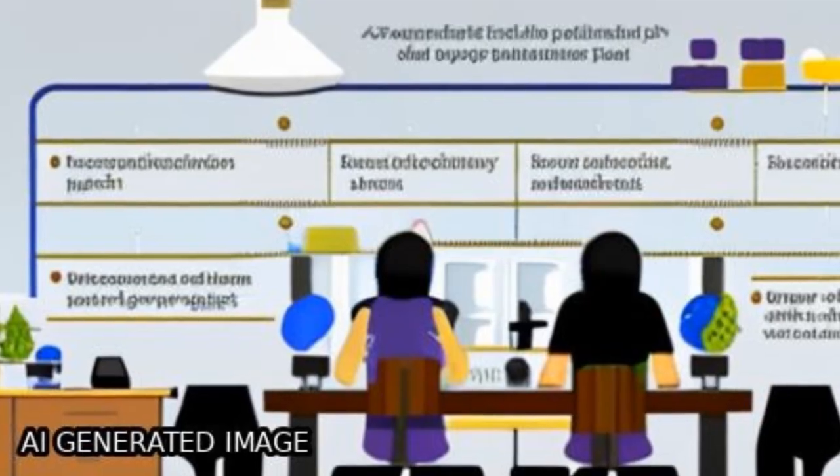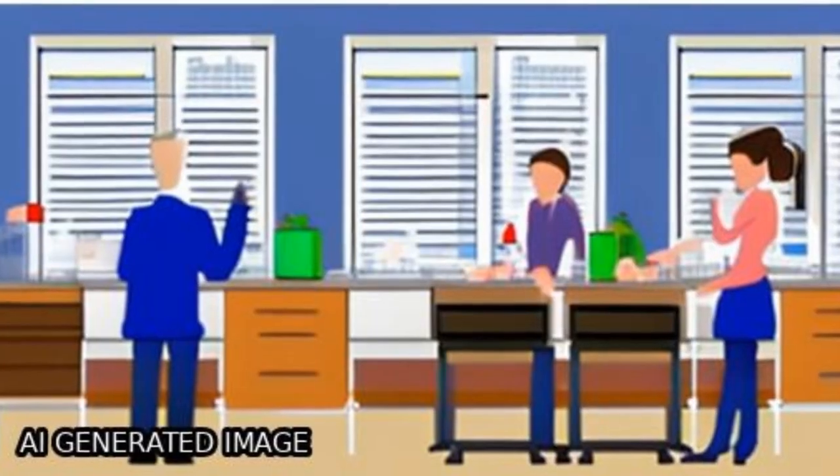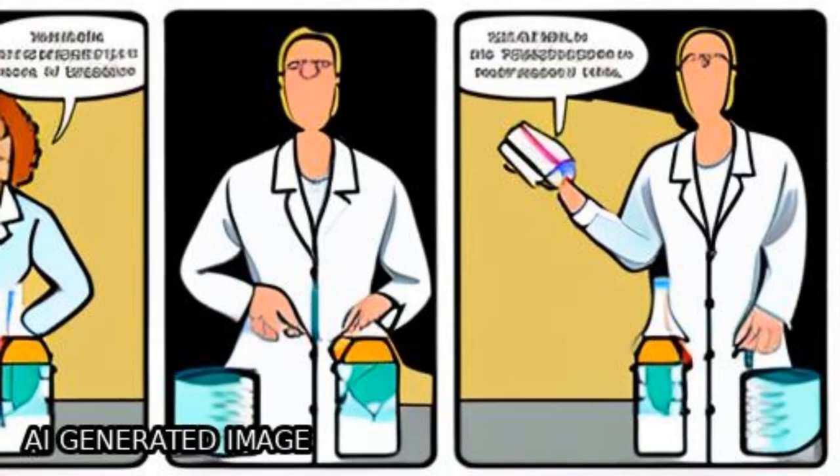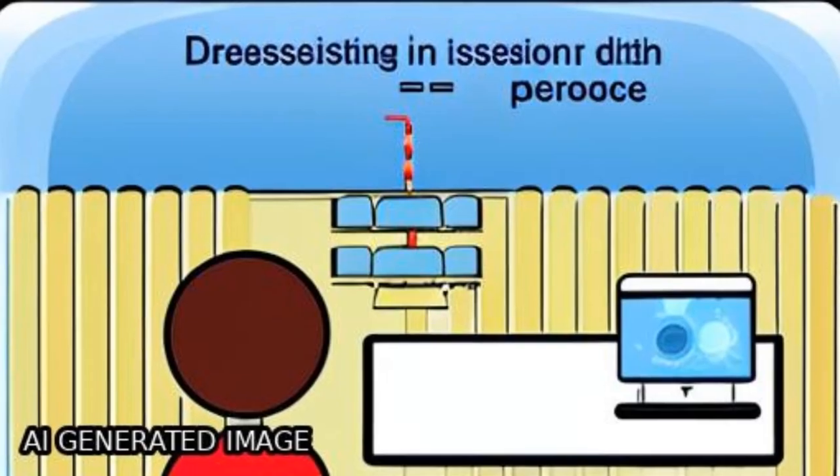The study investigates the association of type D personality and depression with infertility in women. It found that depression and type D personality were significantly more prevalent in the infertile group than the fertile group.